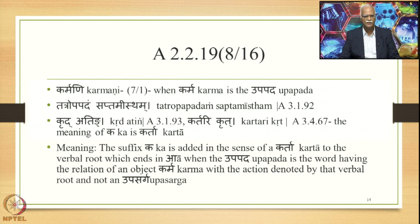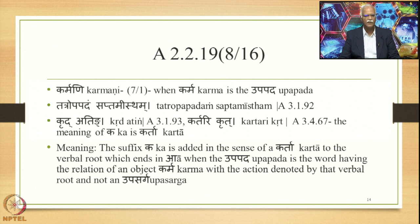The meaning of Sutra 3.2.3 Aato Nupasarge Kaha is: the suffix Ka is added in the sense of a Karta to the verbal root which ends in A, when the Upapada is the word having the relation of an object or Karma with the action denoted by that verbal root, and when the Upapada is not an Upasarga.